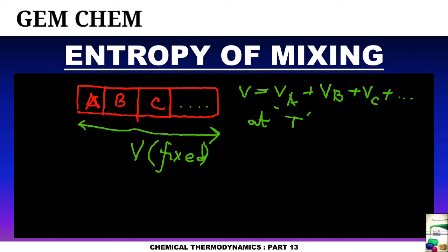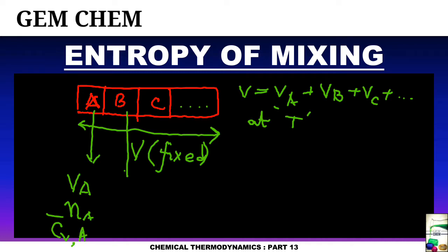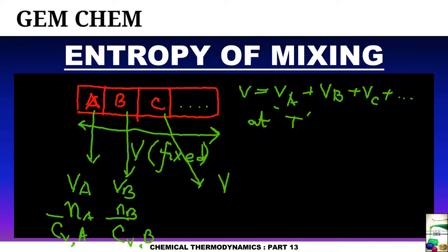For each component, we have the following parameters: gas A has volume V_A, number of moles n_A, and molar heat capacity C̄_v,A. Similarly, gas B has volume V_B, mole number n_B, and C̄_v,B. For gas C, the values are V_C, n_C, and C̄_v,C. These are the parameters we will use.